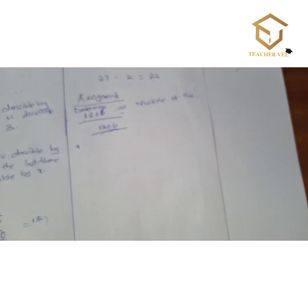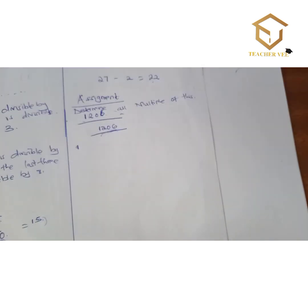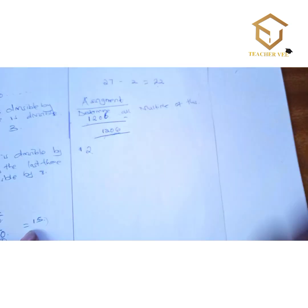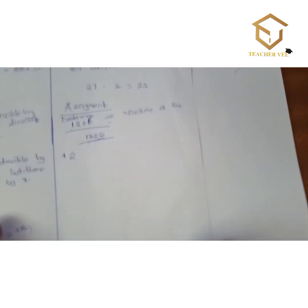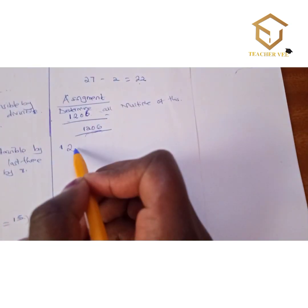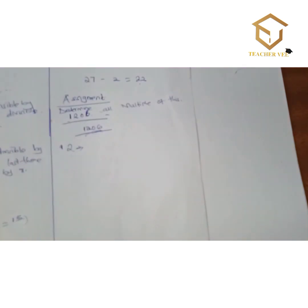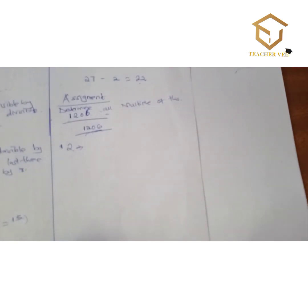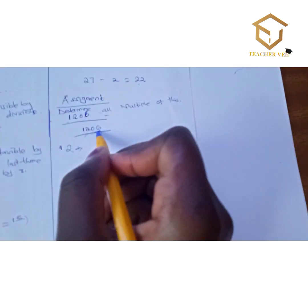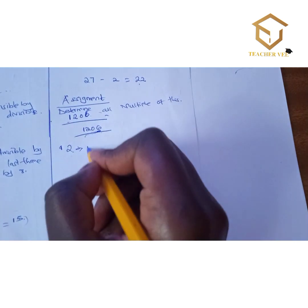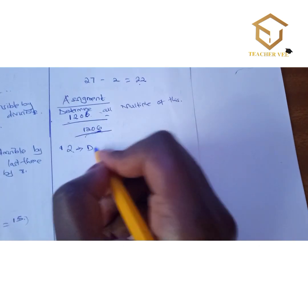The number is 1206. The first check is divisibility by 2. We said that for a number to be divisible by 2, it is supposed to be an even number. Since 6 is an even number, this number is divisible by 2.